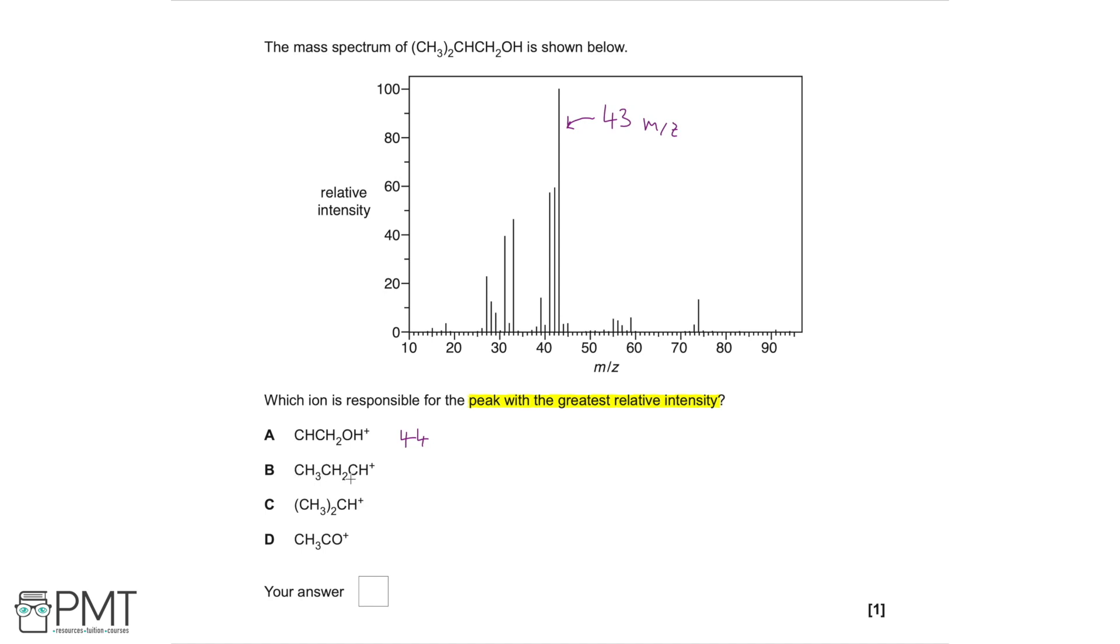We've got three carbons, 36 plus 6, that's 42. We've got CH3, 30 plus 12, 42 plus 1, 43. And CH3CO, that's going to be 27, 43.